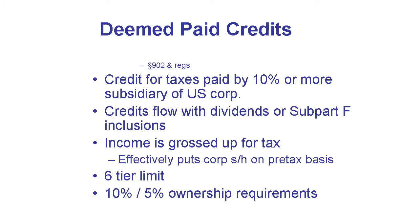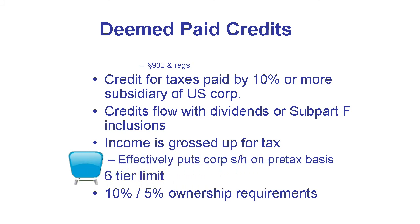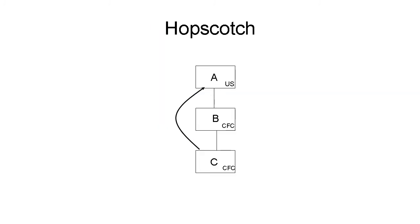When there's a 956 inclusion, the U.S. shareholder gets a deemed paid foreign tax credit if that shareholder is itself a corporation. There's now a limit on the deemed paid foreign tax credit based on the amount of taxes that would have been deemed paid had the amount been paid as a dividend up the chain. In the Acton-Blockett-Centra example, this would mean no deemed paid credit because Blockett had a deficit.